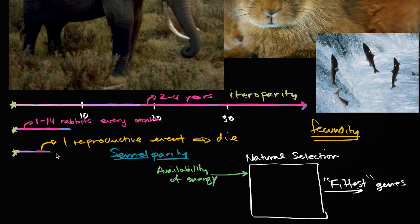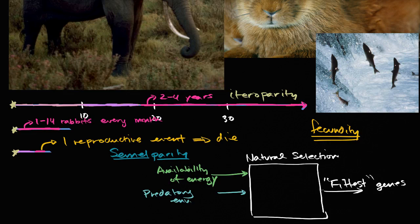We could talk about the predatory environment. We could talk about disease. Every moment that an organism is alive, it has to worry about these things. It has to worry about finding food, or competing for food. It has to worry about predators. It has to worry about disease.